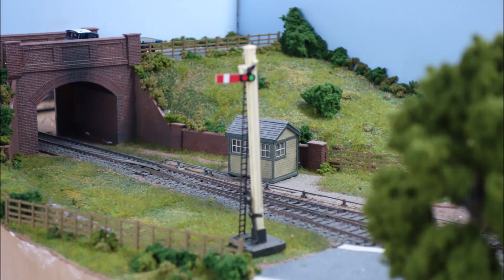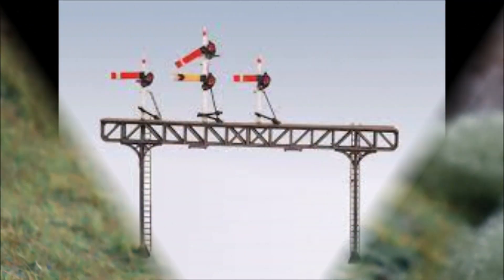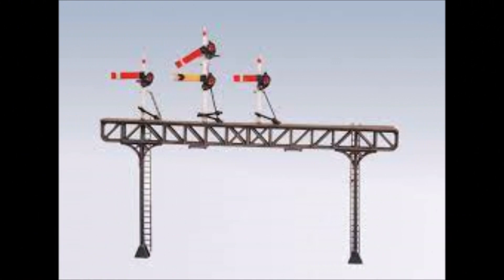Now for the purpose of this exercise I'm going to talk about semaphore signals. There are two types of semaphore signals. There is a red stop signal and there is a yellow distant signal. The stop signal is very much stop or go. You're not allowed to pass that if it says stop. You are allowed to pass it if it says go.